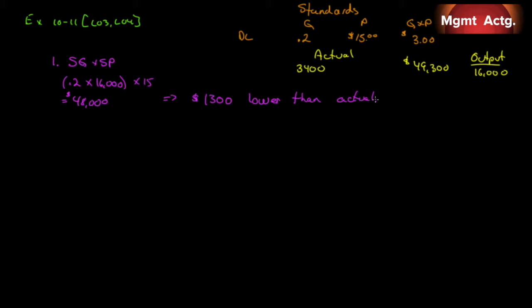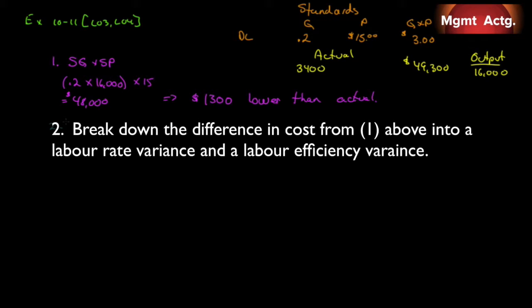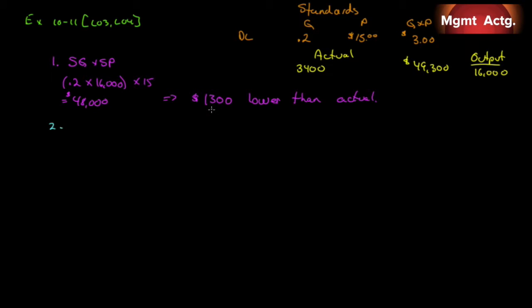We should have incurred $48,000. We actually incurred $49,300, so the standard is $1,300 lower than actual — that's $1,300 unfavorable. That was easy enough. Now, requirement 2: break down the difference into a labor rate variance and a labor efficiency variance. Across the columns we want: actual quantity × actual price, actual quantity × standard price, and standard quantity × standard price.